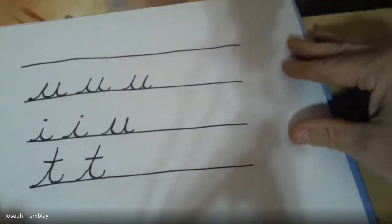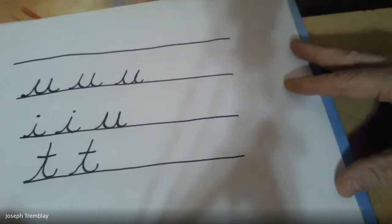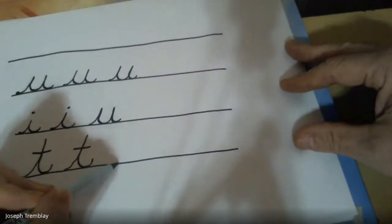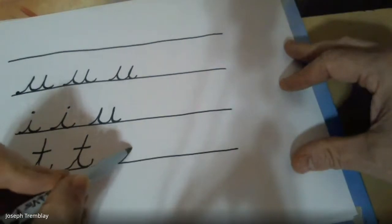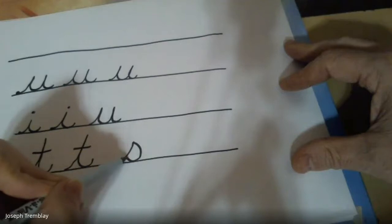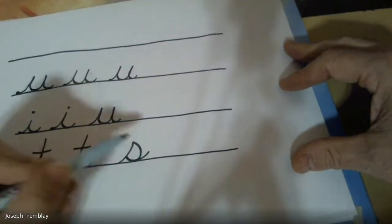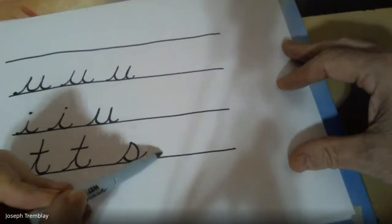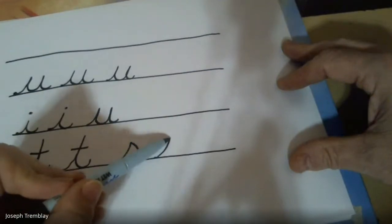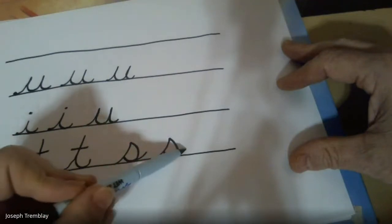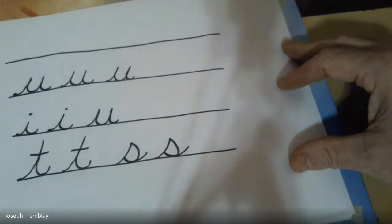Now, what about that other letter we've been working with lately? The letter S. We start where? On the ground, we go upstairs, big fat belly, touch my toes, and swoop out. Again, on the ground, upstairs, big fat belly, touch my toes, swoop out. That's how we make our S.